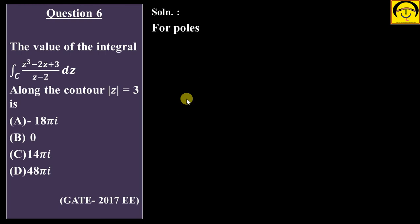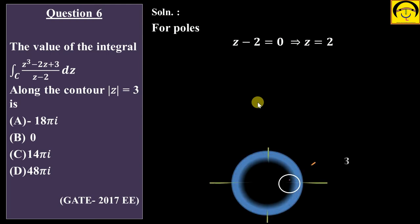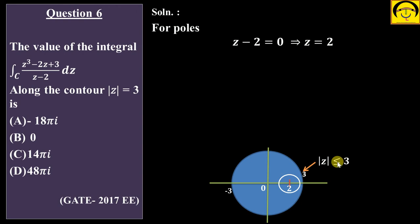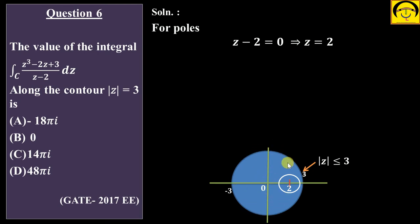Let me draw the figure for you. First find the pole: set the denominator to zero. The denominator is (z − 2), so z = 2 is the pole. Now in the figure, |z| = 3 means the contour is a circle centered at z = 0 with radius 3. And z = 2 — our pole — lies inside this circle, inside this region. So this function is not analytic at that point, meaning f(z) is analytic everywhere but except at z equal to 2.